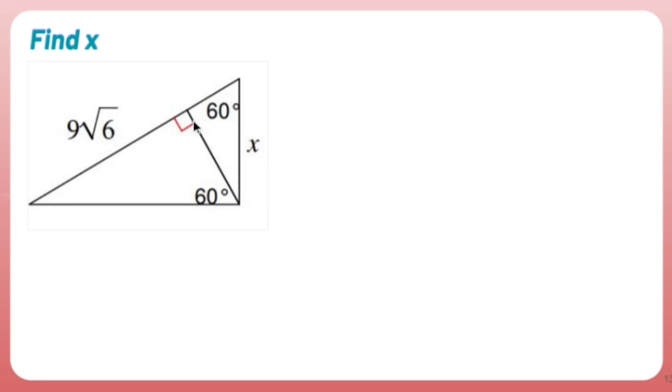What do I know? X is attached to a triangle that has a 90 degree angle and a 60 degree angle, which means there's a 30 degree angle. I'm probably going to end up using the 30-60-90 triangle. So let's draw that out.